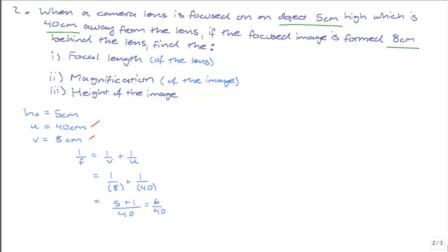So 1 over F is equal to 6 over 40. Hence, F is equal to 40 over 6, or 6.67 centimeters. The focal length of the lens is 6.67 centimeters.